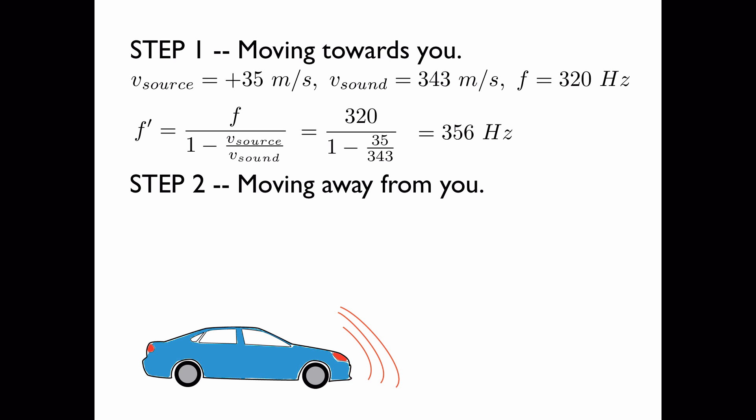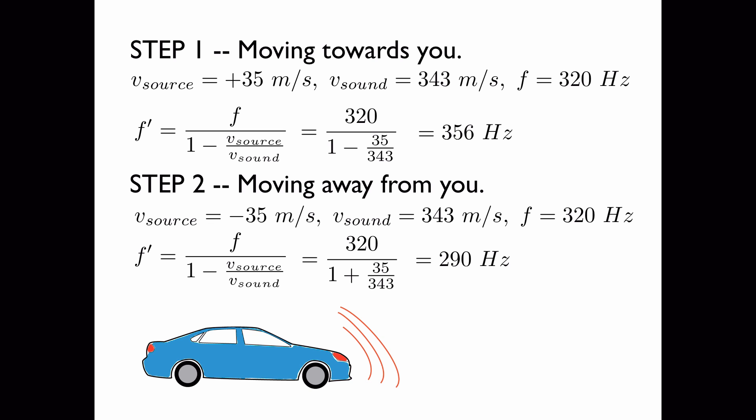Now we'll look at the case where the car is moving away from you. Everything is the same, except when an object is moving away from you, you set the velocity of the speed of the source to be negative. We use the same formula, except in this case, the factor in the denominator is added instead of subtracted. So the result is that the frequency is lower, and it's 290 Hz. So when the car is moving away from you, the frequency that you hear is lower than what the driver hears.